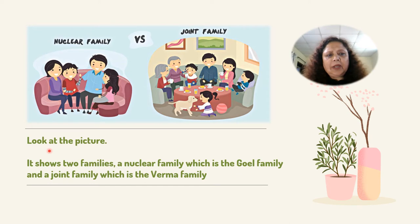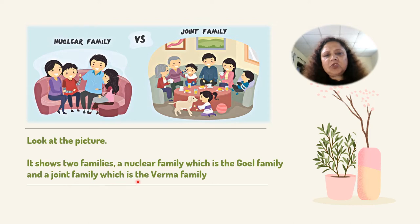Look at the picture. It shows two families: a nuclear family, which is the Goel family, and a joint family, which is the Varma family.